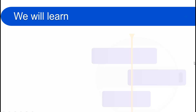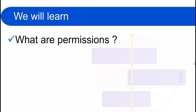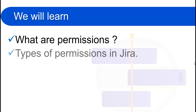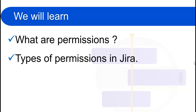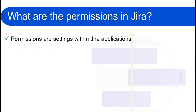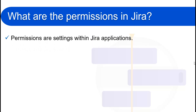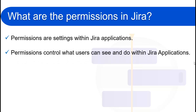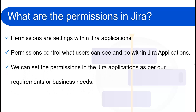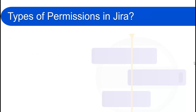Before going forward, we will see what is the agenda of this video. We will learn what are the permissions and the types of permissions in Jira. Permissions are basically settings in Jira applications, and with the help of permissions we can control what users can see and do within the Jira applications. We can set the permissions as per our requirements or business needs.